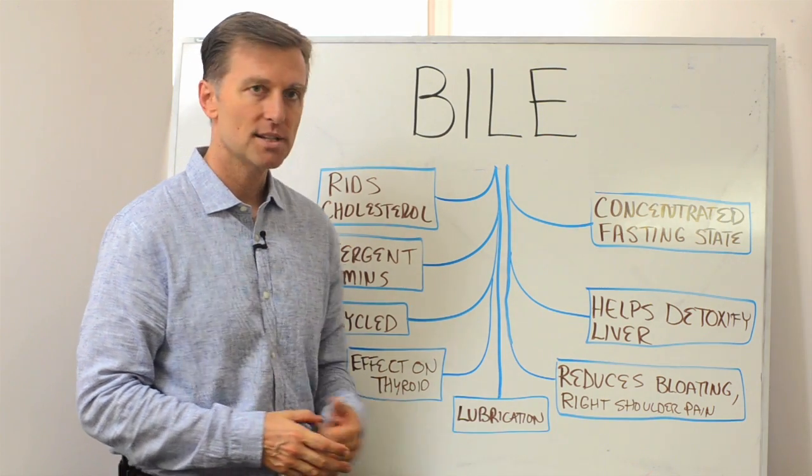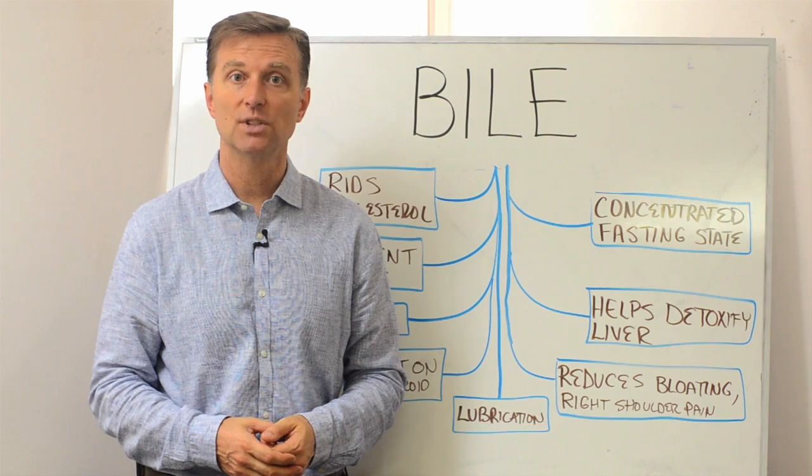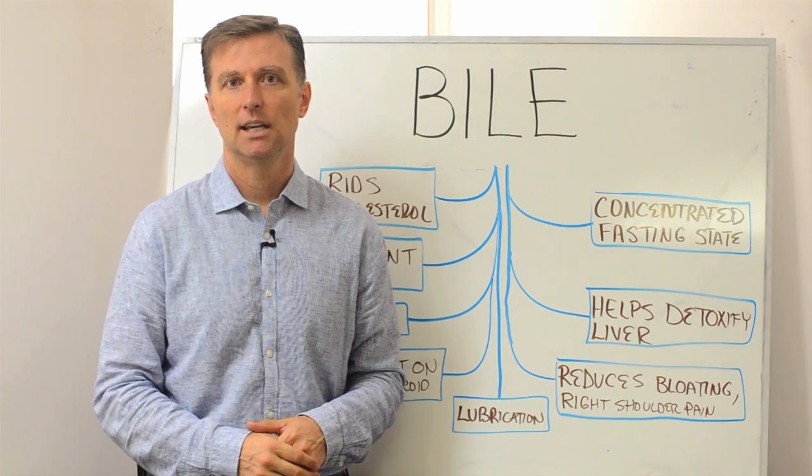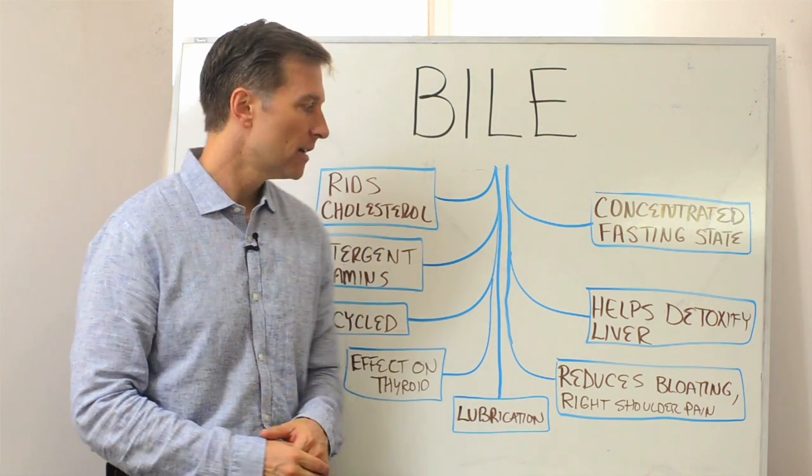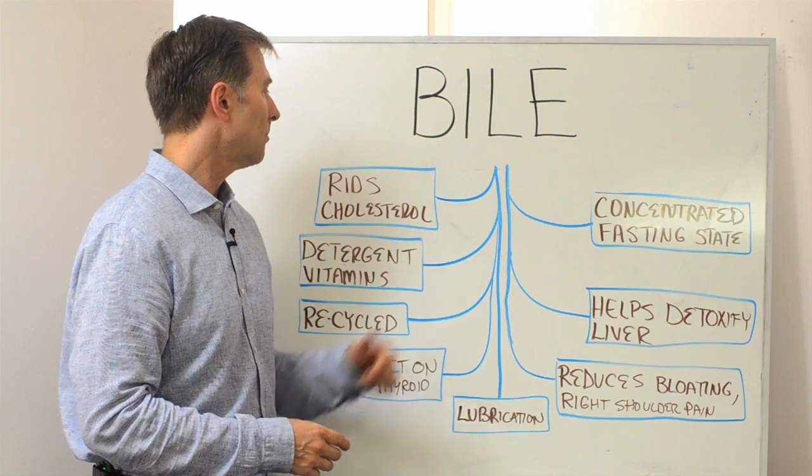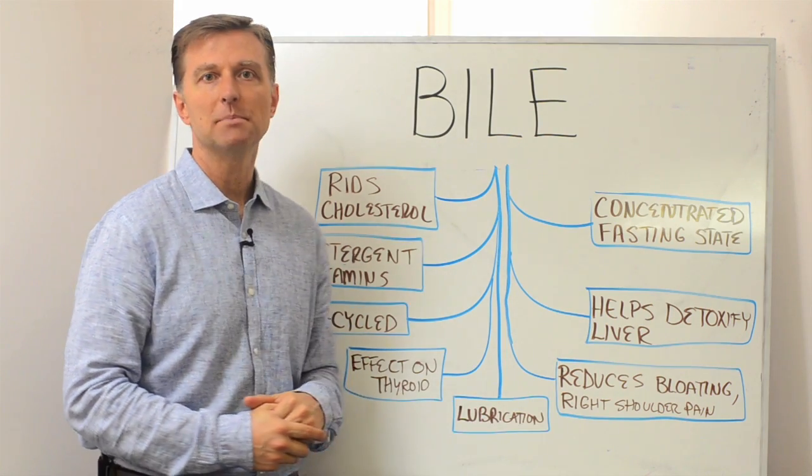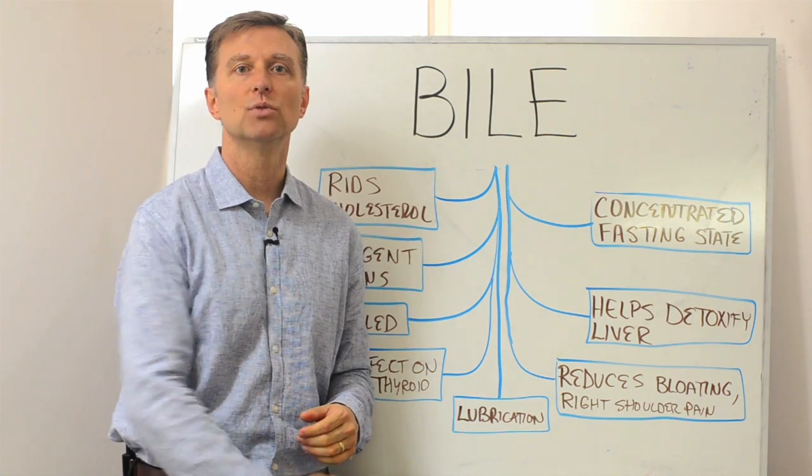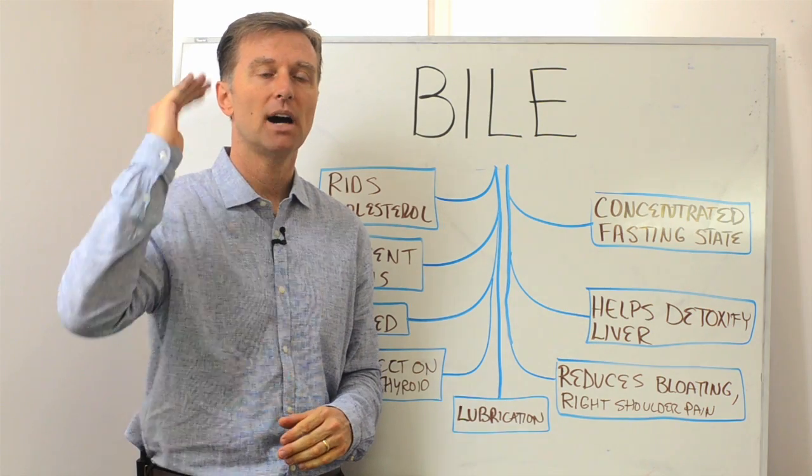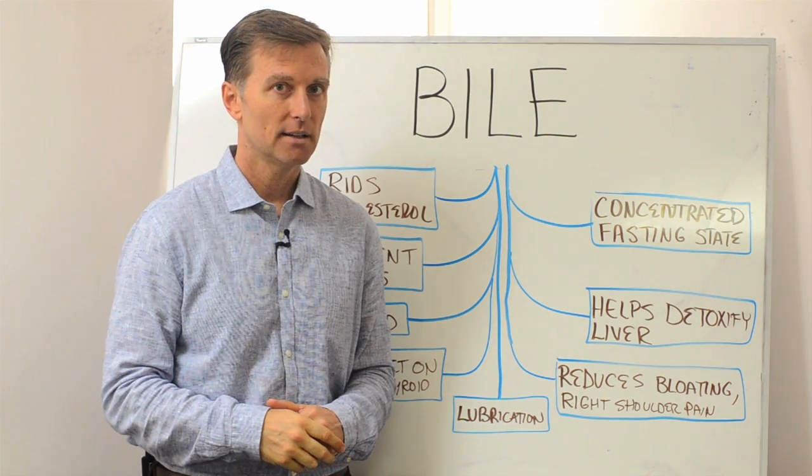Also bile acts as a lubricant. People that are constipated are usually deficient in bile. So they need that to lubricate the colon, which is interesting. They're doing more fiber or laxatives, but they're not adding the bile. Bile also is the thing that keeps the cholesterol flowing through the liver. Without bile, the cholesterol will back up and you could have high cholesterol in the blood.